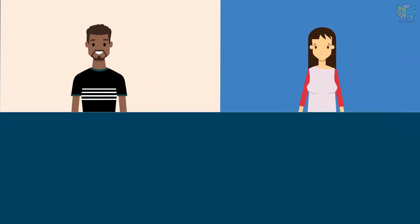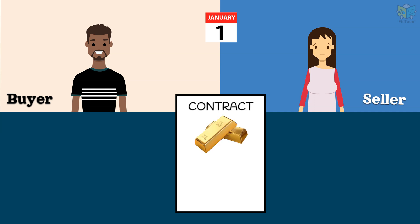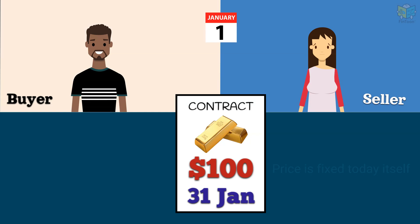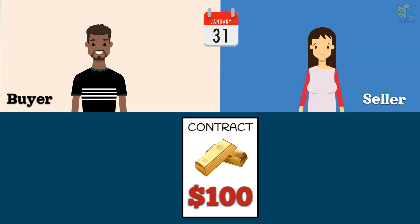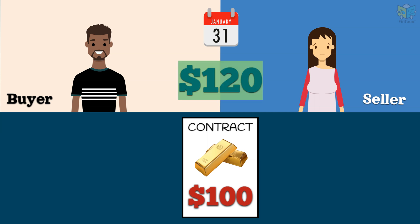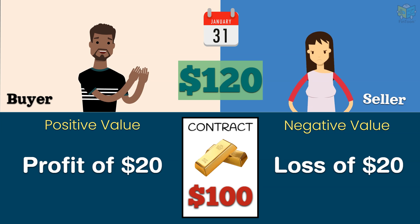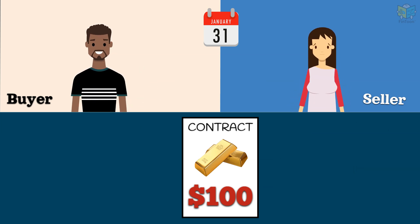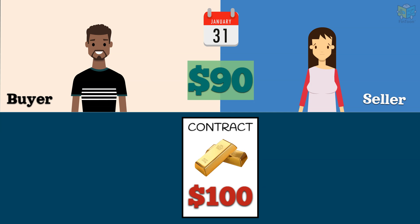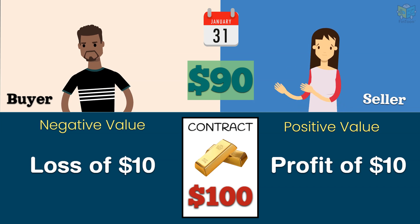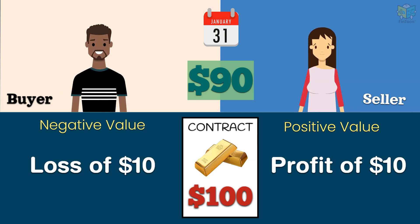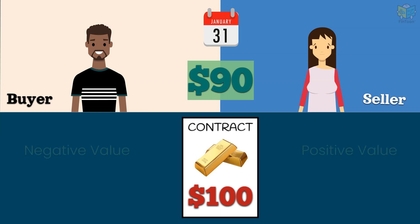For example, Jack and Jill enter into a contract on the 1st of January to buy and sell a bar of gold for $100. They want the transaction to happen on the 31st of January, but they have agreed upon the price today. The transaction price is fixed and will not change. If the actual price of gold increases to $120, the contract benefits the buyer Jack, as he gets to buy the gold for $100 when the actual price is $120. If the actual price of gold decreases to $90, the contract benefits the seller Jill, as she gets to sell the gold for $100 when the price is actually $90. This is a derivative contract as it derives its value from the price of an underlying asset, which in this case is gold.